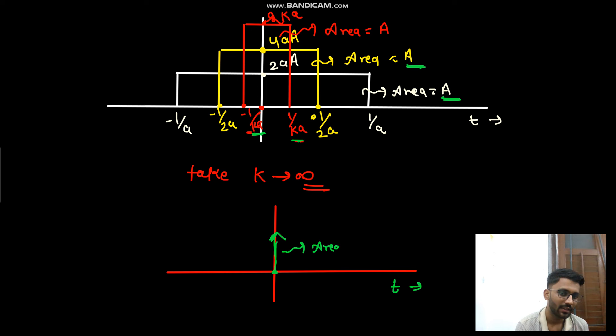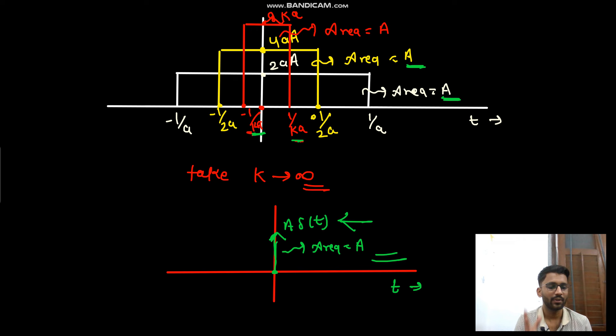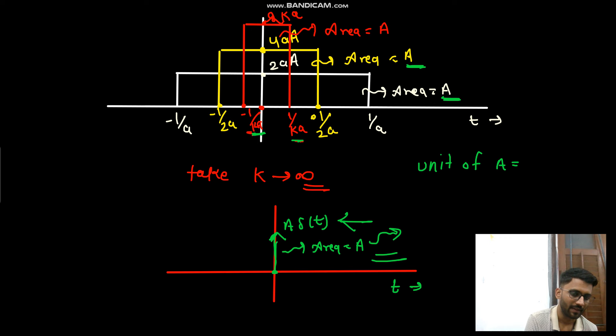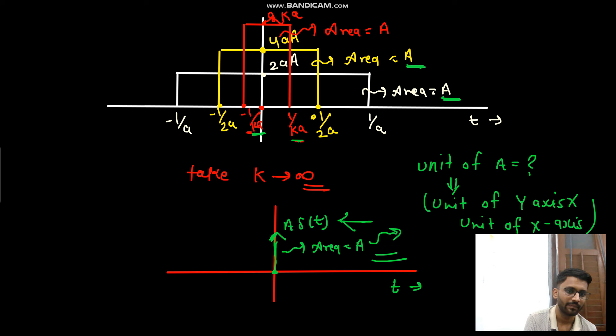Since the magnitude is infinity, we represent it as a·δ(t). Here the area is a but the magnitude is infinity. What is the unit of a? The unit of a equals the unit of the y-axis multiplied by the unit of the x-axis, because a is the area.